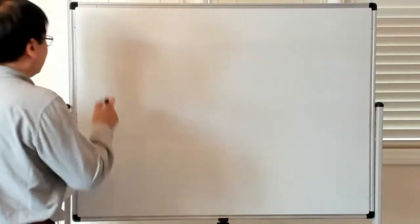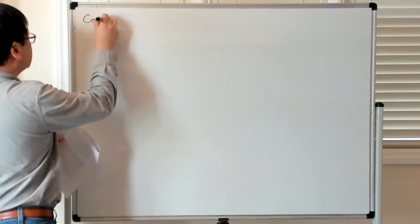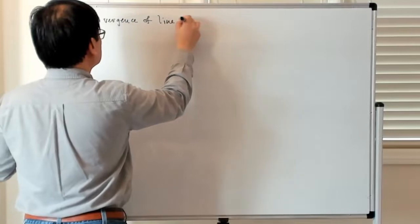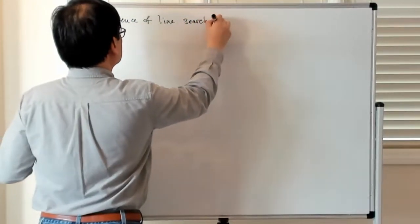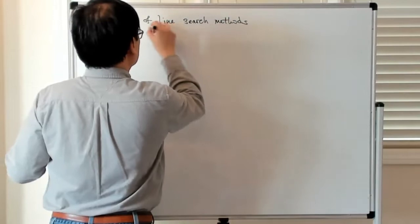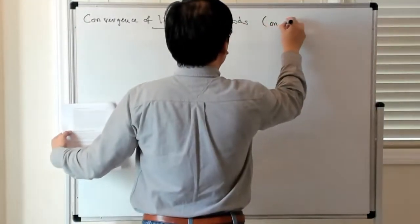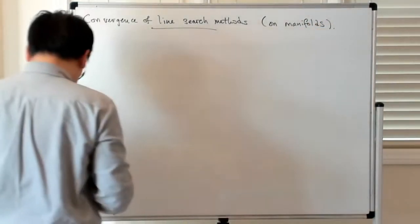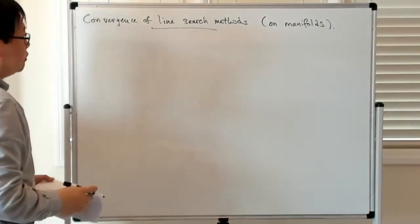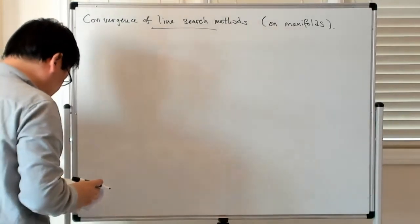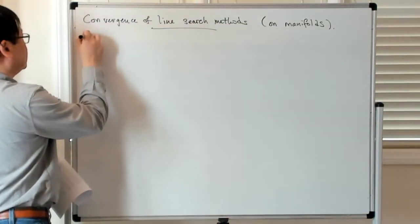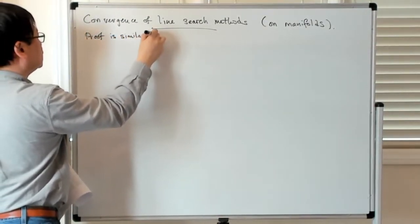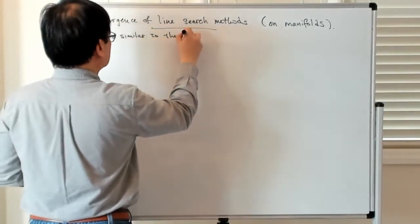Alright, so now we're going to talk about convergence of line search methods on manifolds. As you might expect, the proof is very closely motivated by the vector space case with some important caveats — the proof is similar to the vector space case.